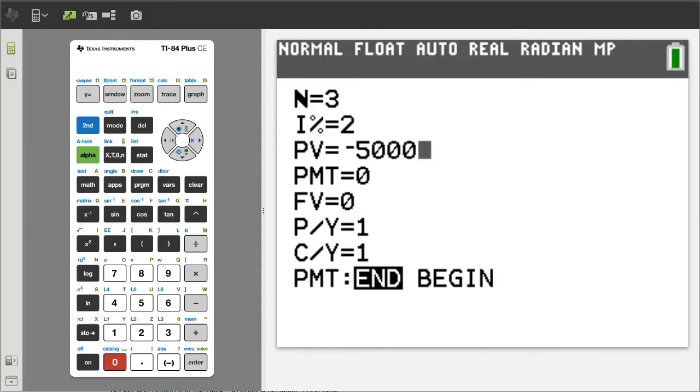Go down to the next variable, PMT. PMT is payments that you are adding into the bank each period. We are not adding any money into the bank during the 3 years. We are just putting in one time $5,000 at the beginning and let it sit for 3 years. So leave PMT as 0.